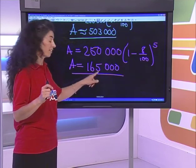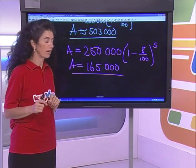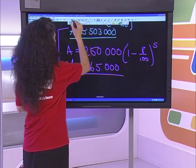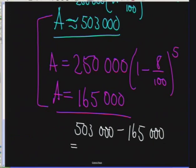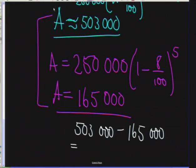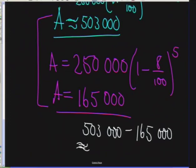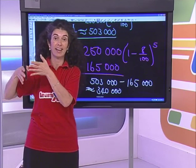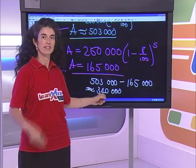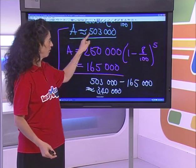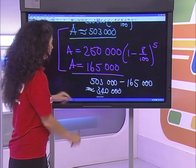The scrap value is R165,000 but we need a new machine at R503,000. The difference is R503,000 − R165,000 ≈ R340,000. That R340,000 becomes our future value — the amount we need to have saved through the sinking fund so we don't have to borrow money in five years. The sinking fund is the replacement value minus the scrap value.